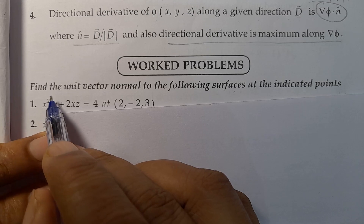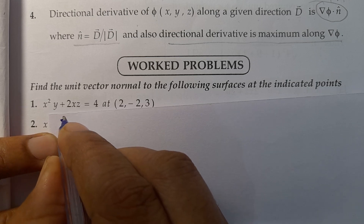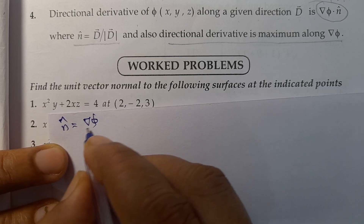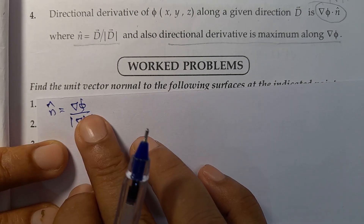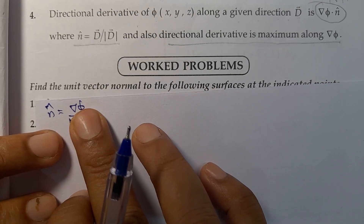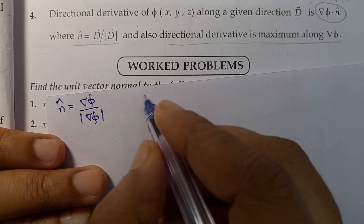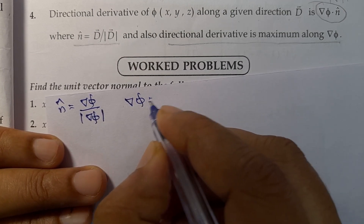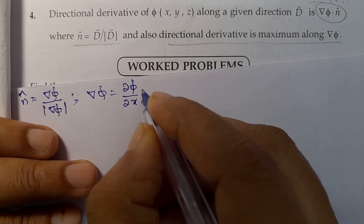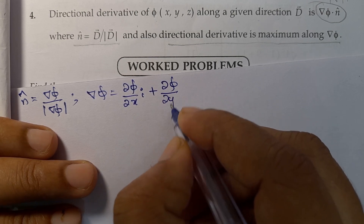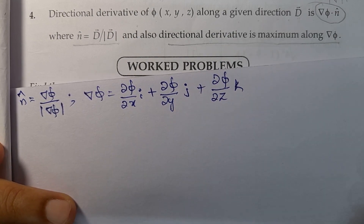So, find out the unit normal vector. The required unit normal vector is del phi divided by magnitude of del phi. Here, del phi is the vector normal to the surface. Next, del phi equals the formula: del phi equals dou phi by dou x into i, plus dou phi by dou y into j, plus dou phi by dou z into k.